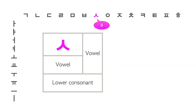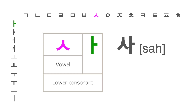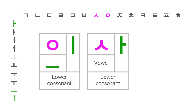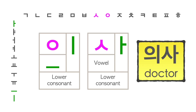This is the consonant 시옷, which makes the S sound. Together with the vowel 아, this letter is pronounced 사. The first letter is 의 from the previous example and the second letter is 사 — together, this is the word 의사, which means doctor.